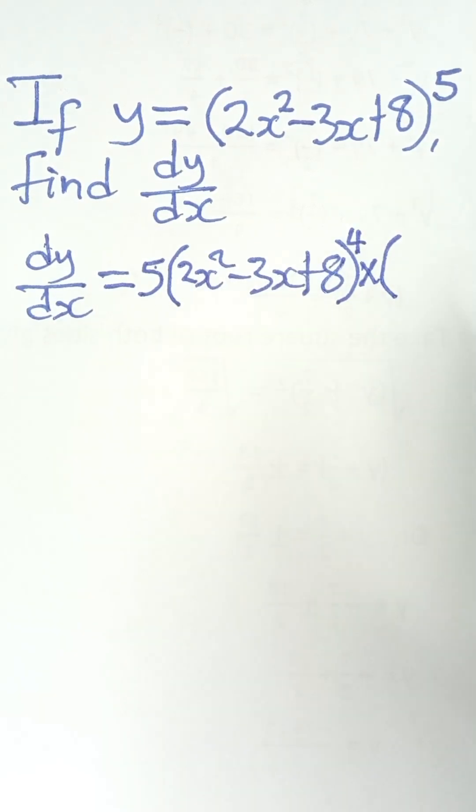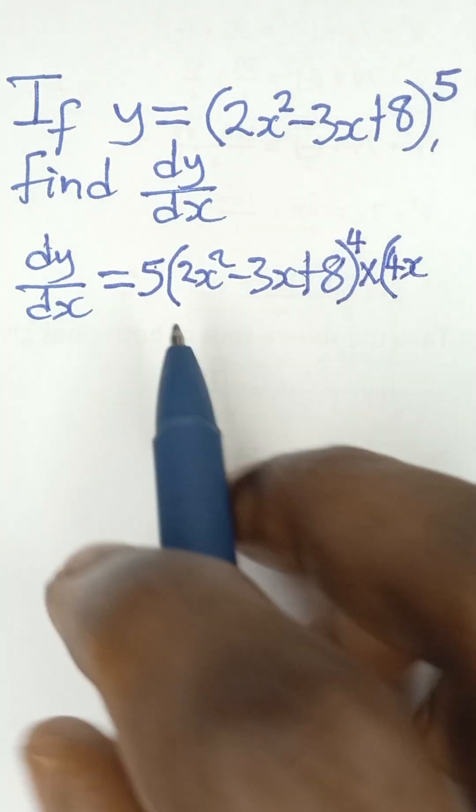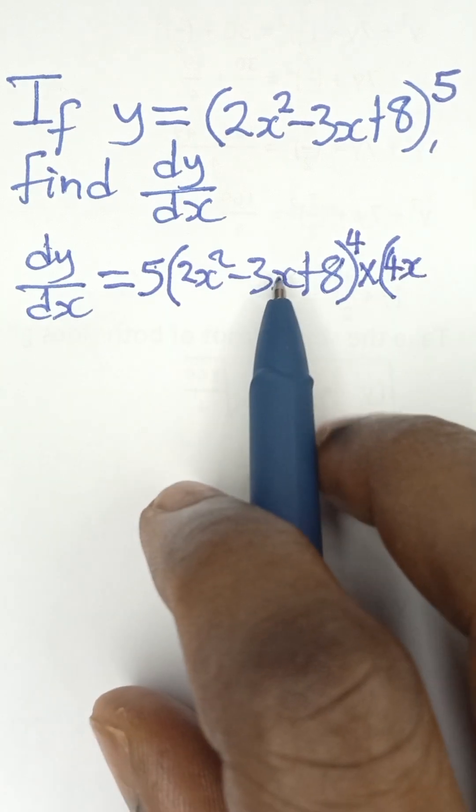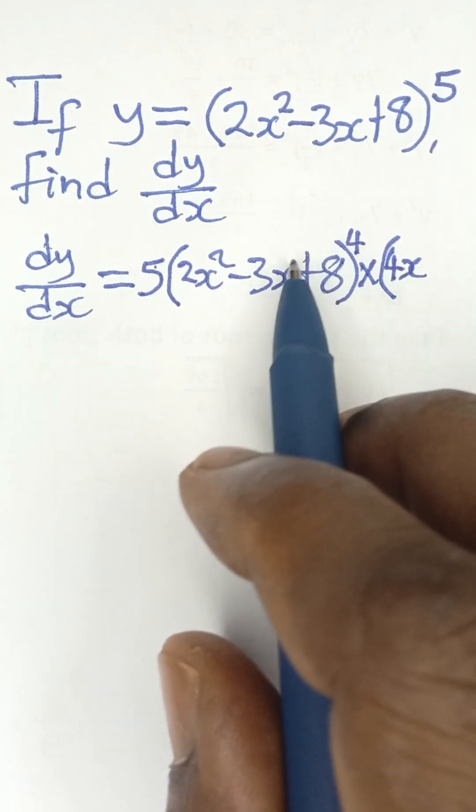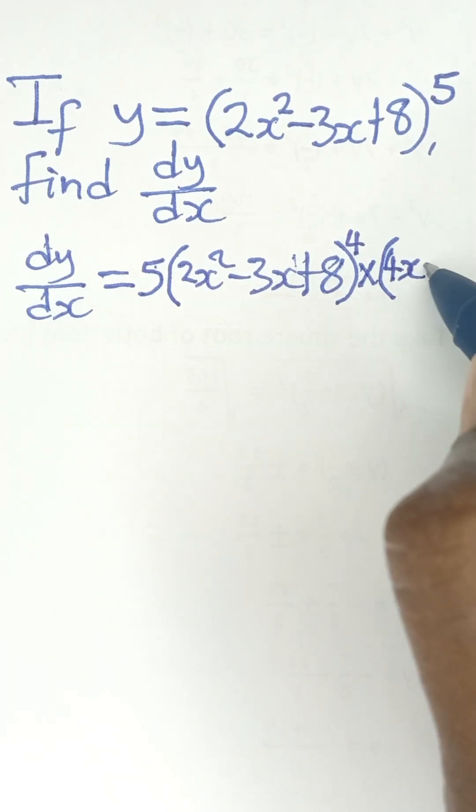So it becomes 2 multiplied by 2, which is 4x, because you subtract 1 from the power of x, so you are left with x raised to the power of 1. And then this one, this is like x raised to the power of 1. So the 1 multiplies 3, so you are left with minus 3.